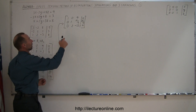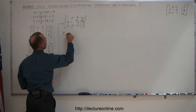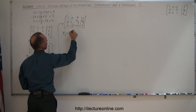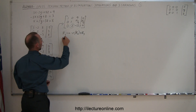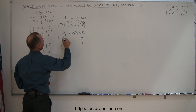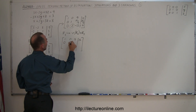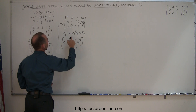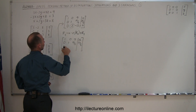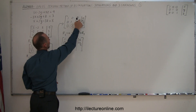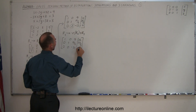Now the next step is to turn the entry in row three, column two into zero. Since row one, column two is already zero, I only need to handle row three. Row three is replaced by negative two times row two added to row three. Negative two times one added to two gives zero; negative two times nineteen over two gives minus nineteen, added to minus twelve gives minus thirty-one; negative two times twenty-seven over two gives minus twenty-seven, added to negative four gives minus thirty-one.